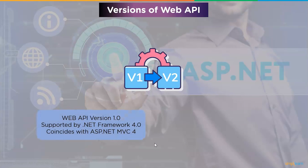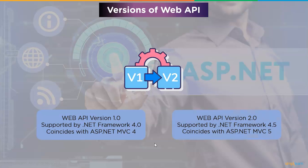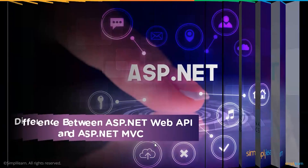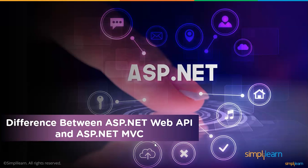Let's look at the different versions of Web API. Version 1.0 is supported by .NET Framework 4.0 and coincides with ASP.NET MVC 4. The current version, 2.0, is supported by .NET Framework 4.5 and coincides with ASP.NET MVC 5.